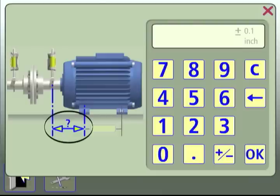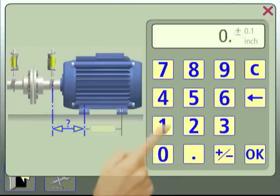First is the distance from the movable detector to the front feet of the movable machine. Enter the distance and touch OK.